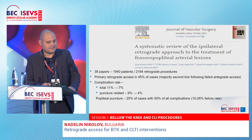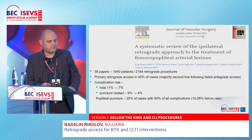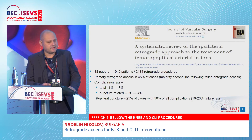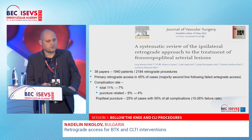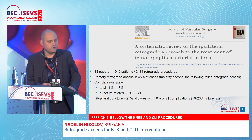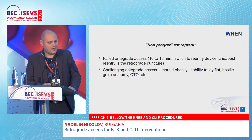The next systematic review is very fresh — from May this year by Guy Martin — covering 338 papers and also around 900 patients. Primary retrograde access was used in 45% of cases, with the majority as a second option following failed antegrade access. Total complication rate was 11%, puncture-related 9%. However, popliteal puncture — used in 25% of cases — accounted for 50% of complications. Excluding popliteal puncture, total complications drop to 7% and puncture-related to 4%.